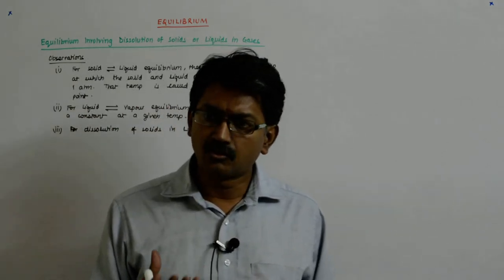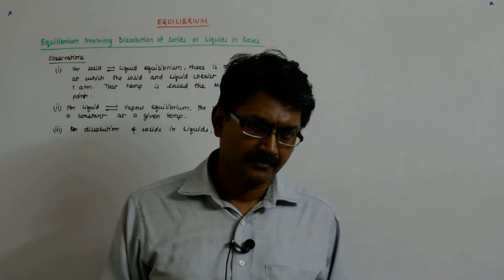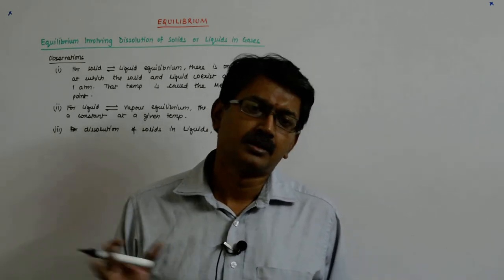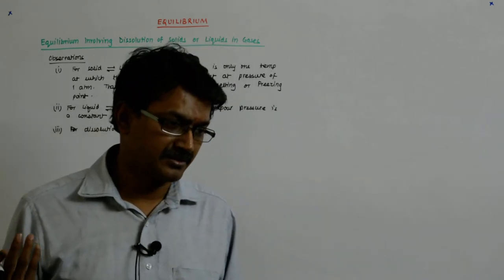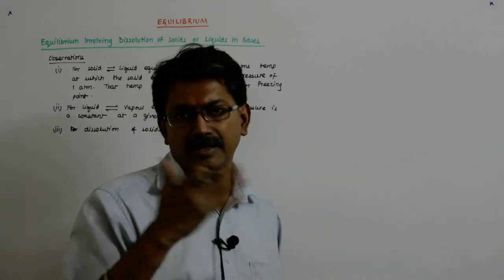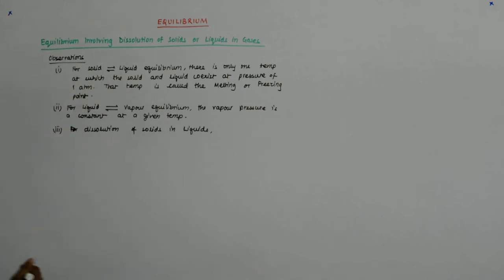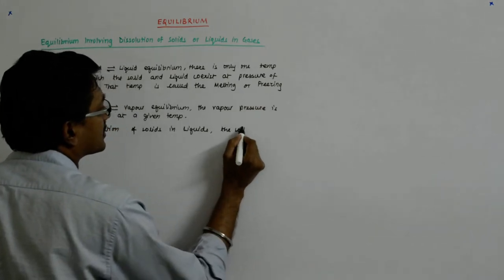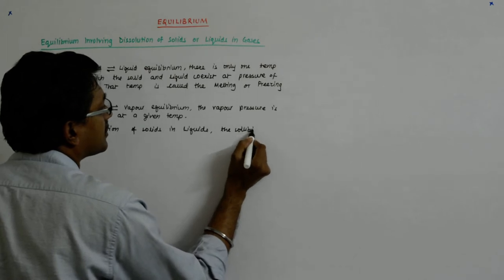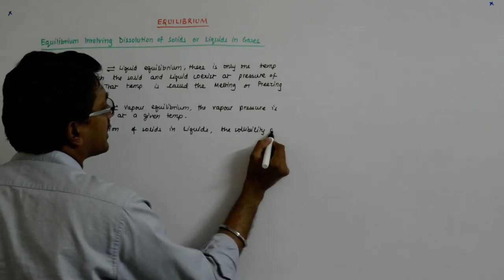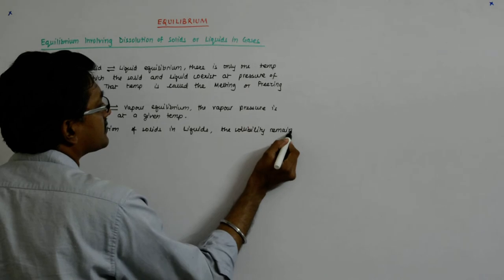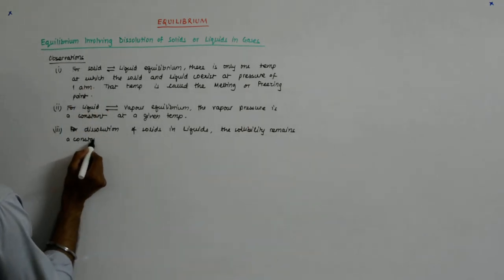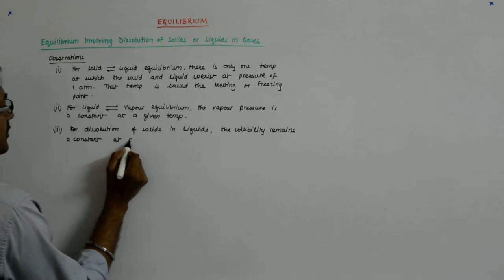If you want the honey back to liquid, you just warm it a bit — put it in lukewarm water and after some time it automatically melts and becomes clear. Otherwise it looks opaque and whitish. So the solubility remains constant at a given temperature.